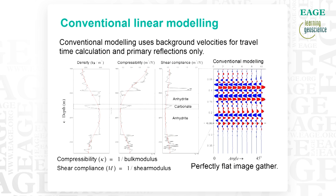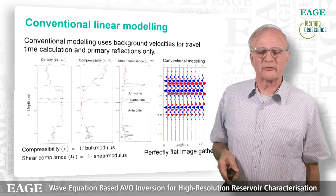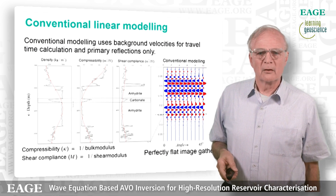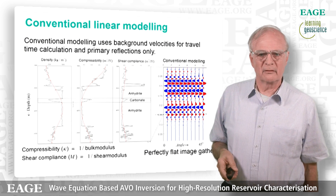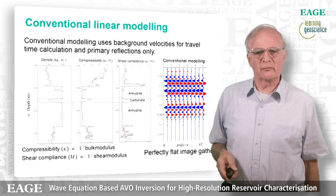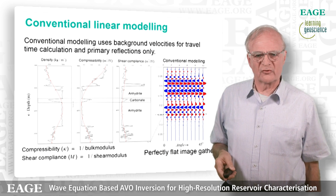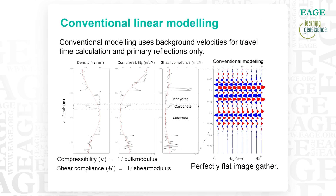Jumping straight into an example: I have here a set of logs. Normally you're used to seeing density and VP and VS, but here really decomposed into the elastic properties — compressibility, which is one over the bulk modulus, and the shear compliance, which is one over the shear modulus. You see a very challenging setting: an anhydrite with an embedded carbonate. On the right-hand side, the panel shows a straightforward linear reflectivity model convolved with the band-limited wavelet. This is the linear model — note that it's a perfectly flat image gather.